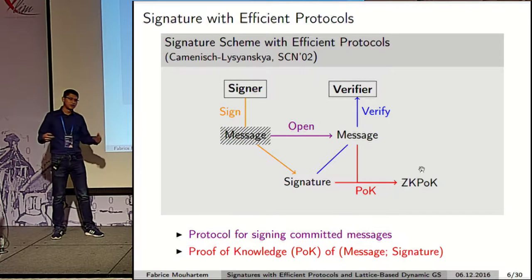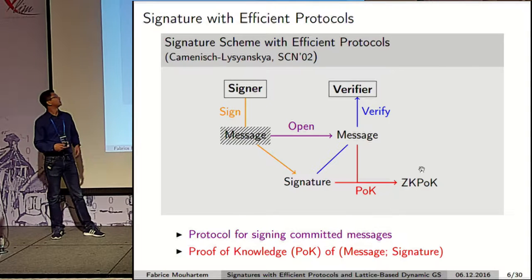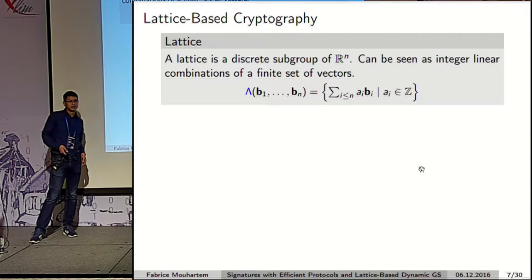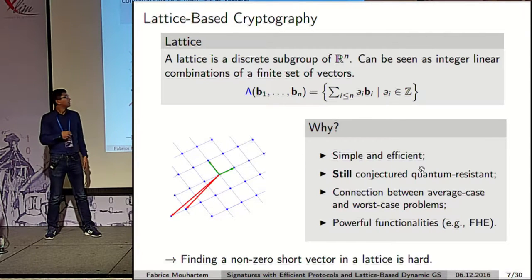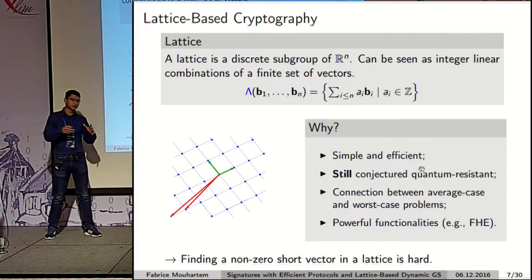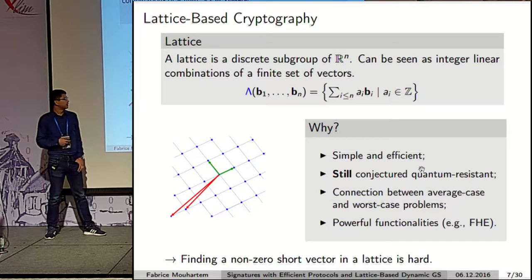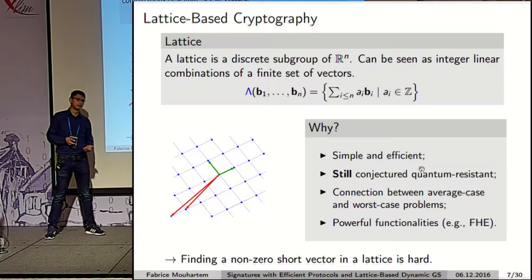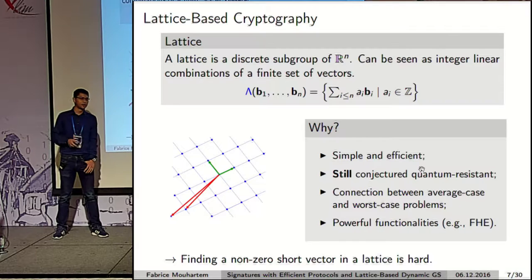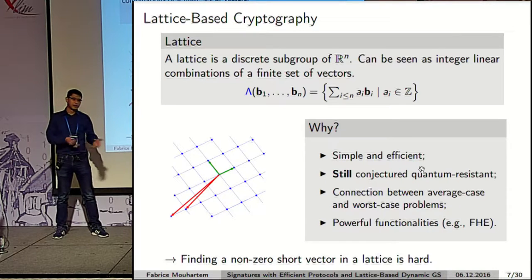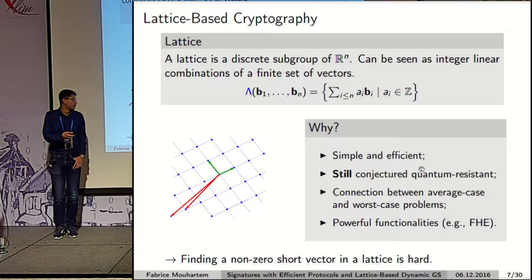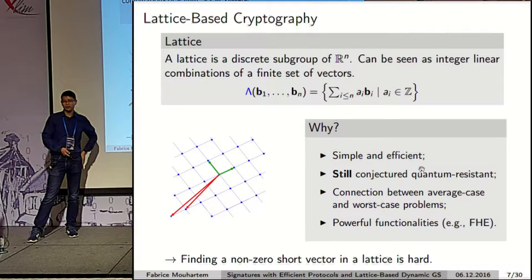All existing constructions are based on strong RSA or bilinear maps. In order to not put all eggs in the same basket, we want to build this primitive in the lattice setting. A lattice is the integral linear span of some finite set of independent vectors. The hard problem on lattices is to find a non-zero short vector in the lattice. This is conceptually simple and asymptotically efficient, and there is a connection between average-case and worst-case lattice problems.